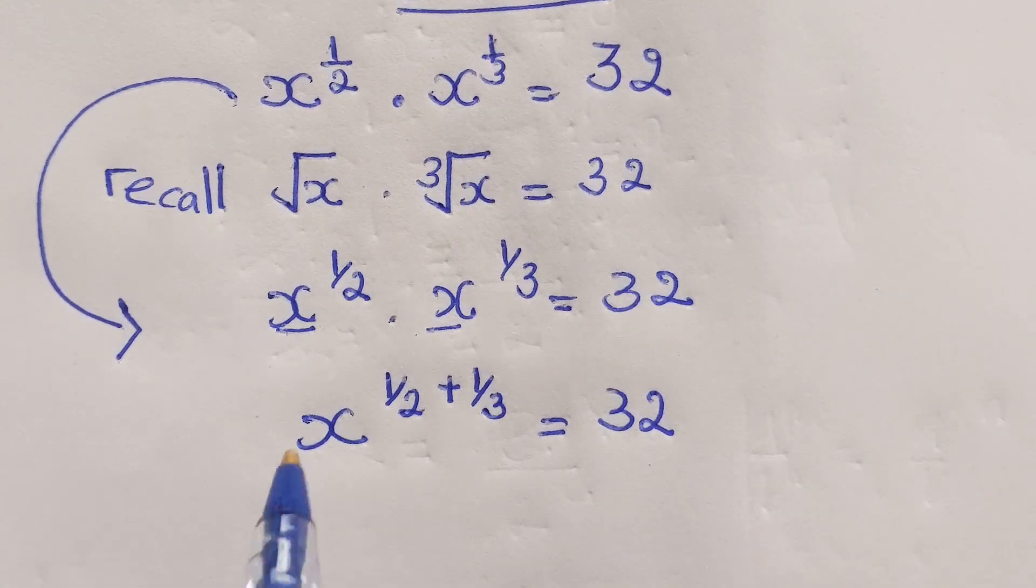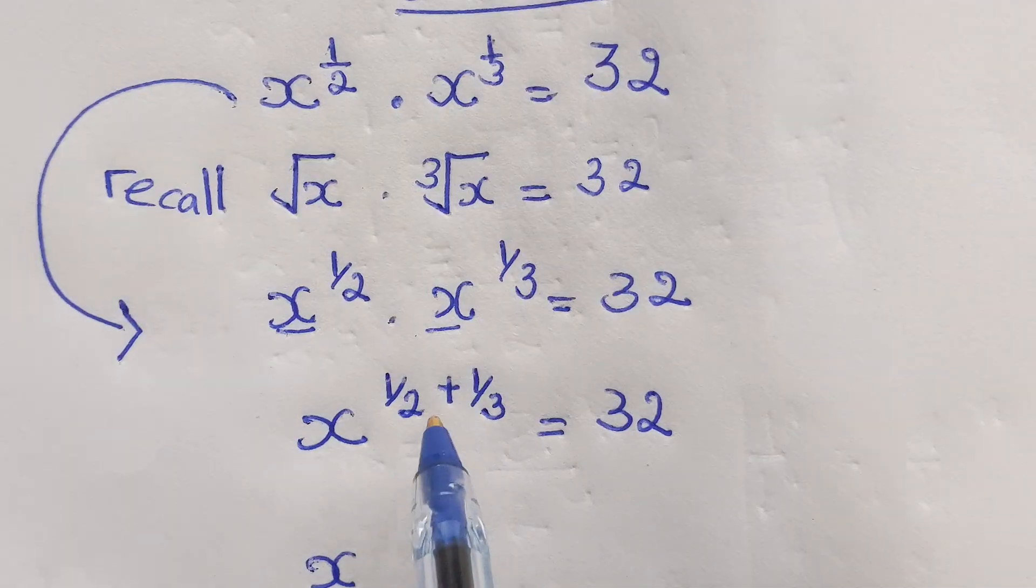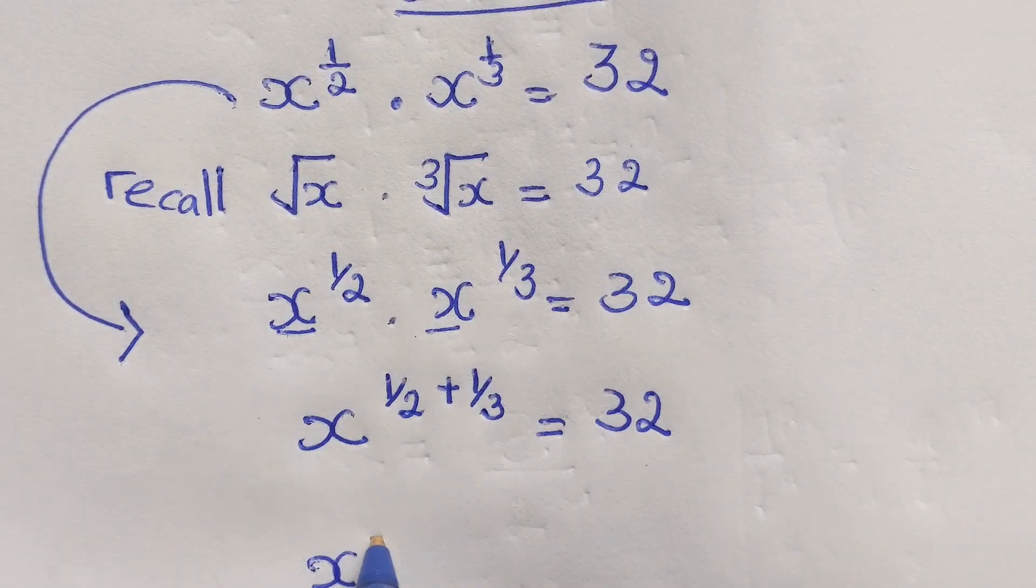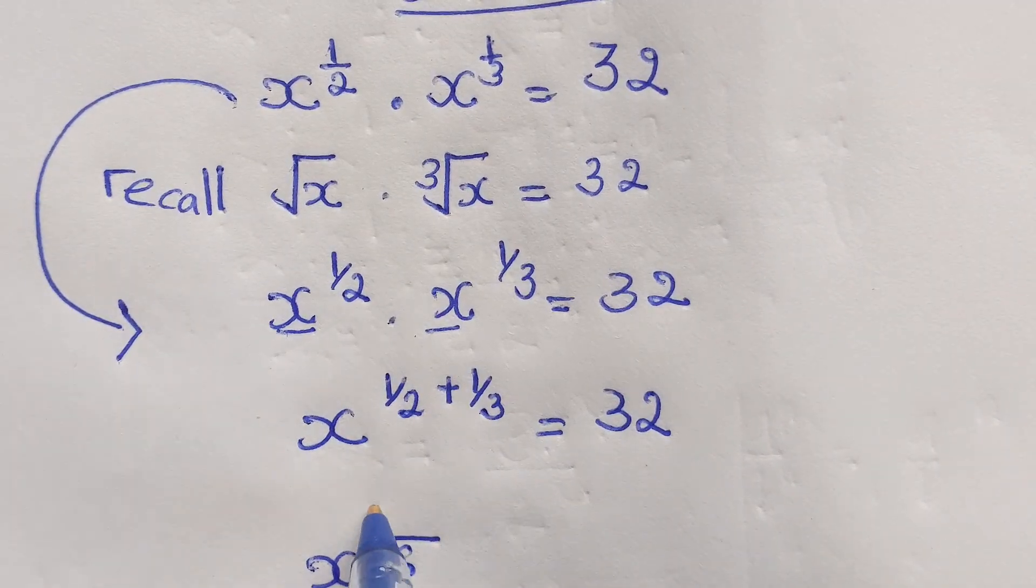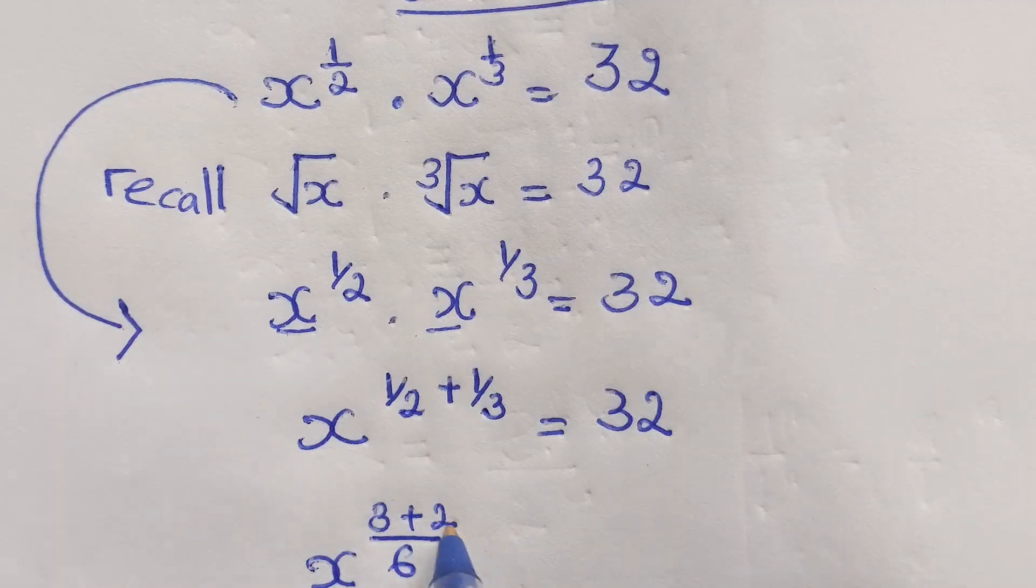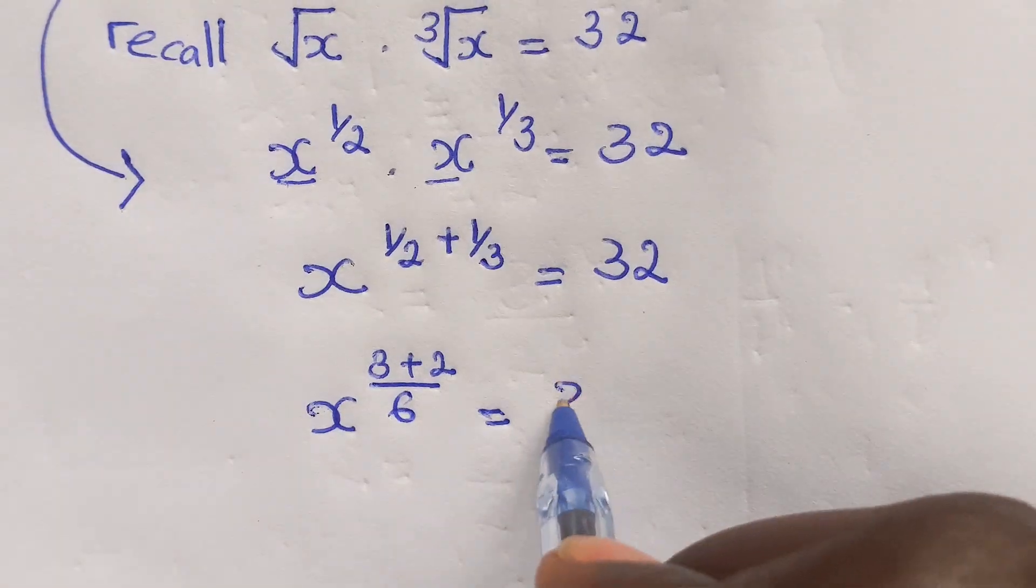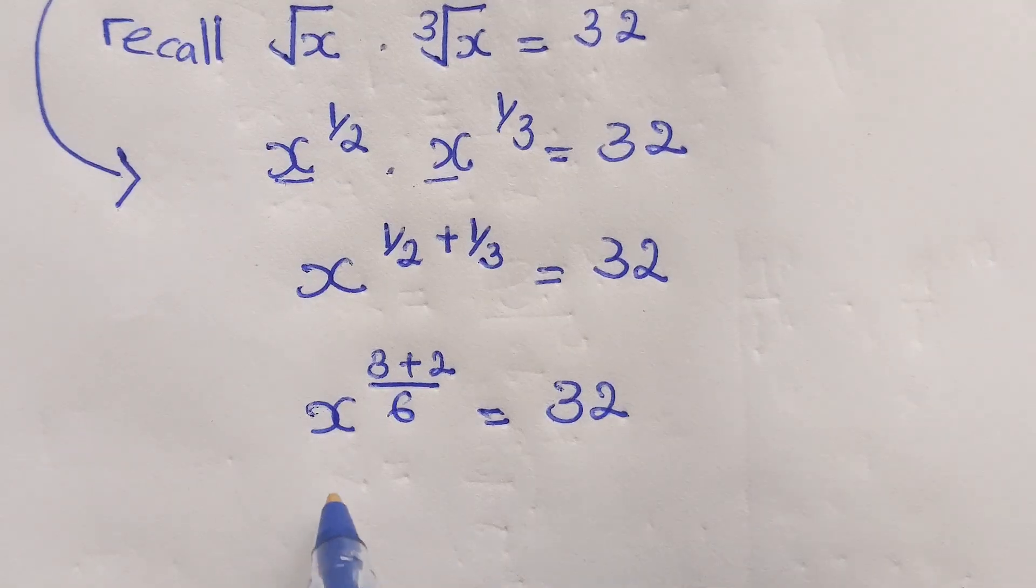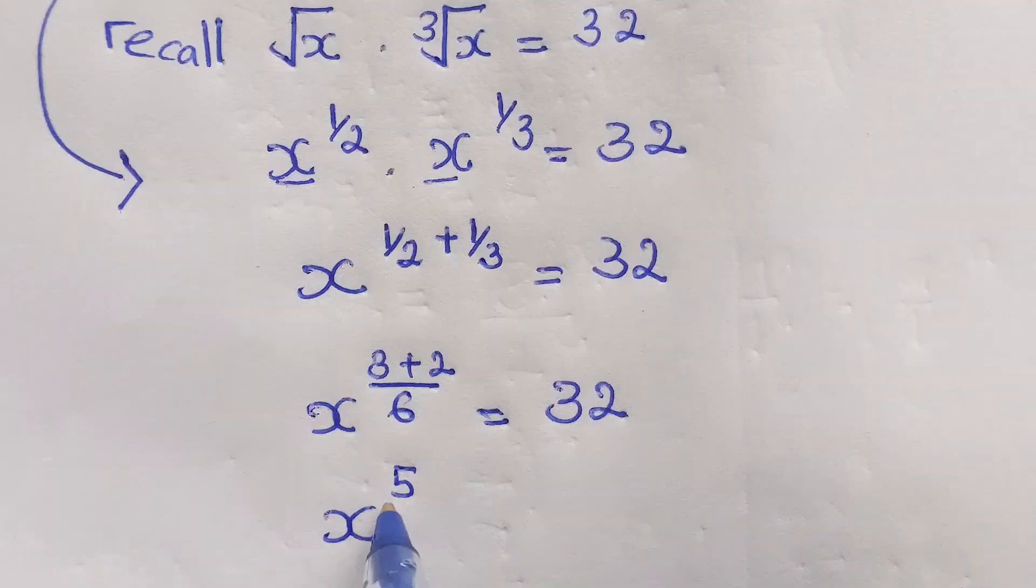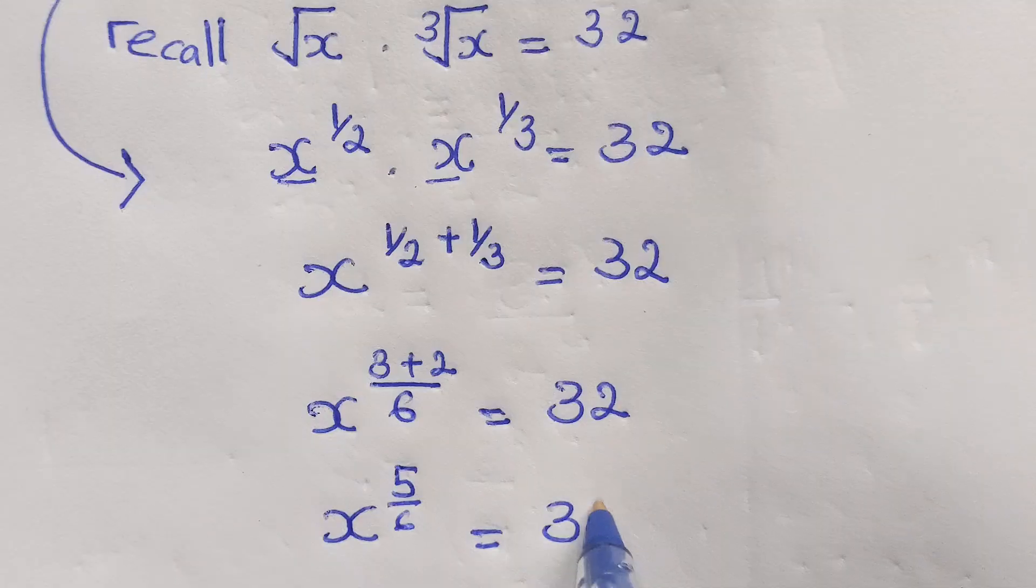And of course, up here at the top, on this power we have to find common denominator equal to 6. Then by cross multiply, get 3 plus 2, then equal to 32. And at this stage, we have x power 5 over 6 equal to 32.